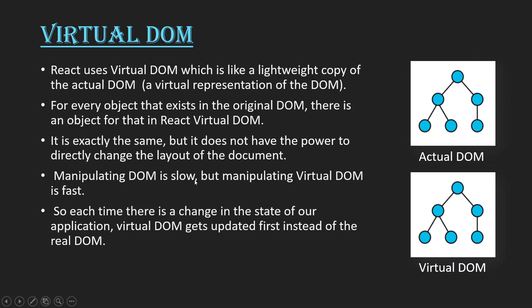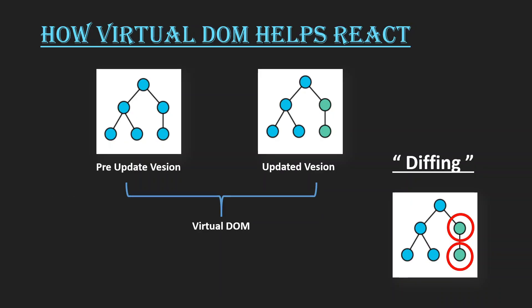Manipulating the real DOM is slow, as we saw previously. But manipulating the virtual DOM is very fast, and that's what makes React so fast — with the help of the virtual DOM. Each time there is a change in the state of our application in React, the virtual DOM gets updated first instead of the real DOM. React maintains two virtual DOMs: one is the pre-update version and one is the updated version.